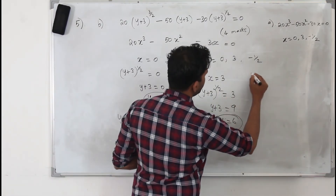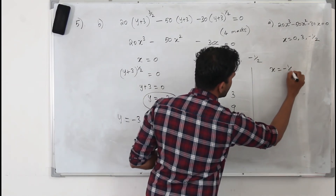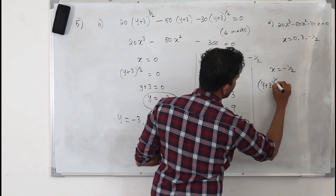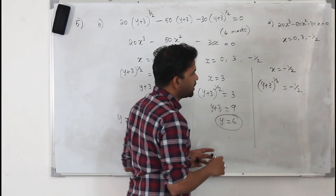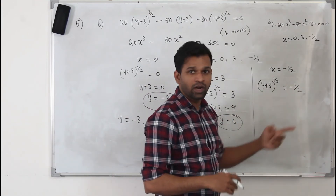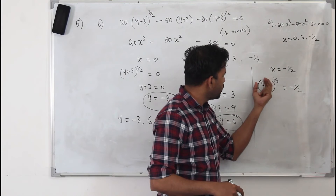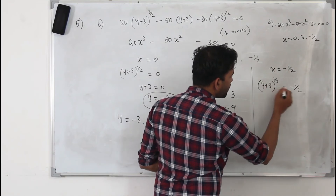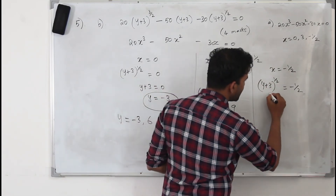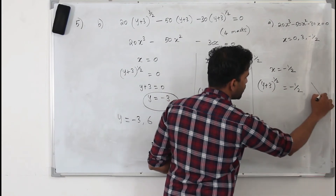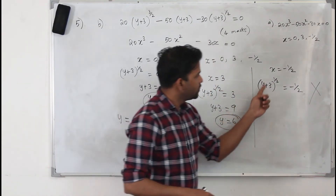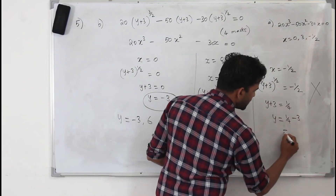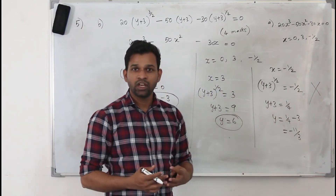When you take the third value, x equals minus one half: (y plus 3) to the power of one half equals minus one half. Don't just blindly square it. When you have a negative number here, strictly, a square root of something is strictly a positive number. That means no square root of any number will give you a strictly negative result, so there is no real number solution for this. You can just omit it.